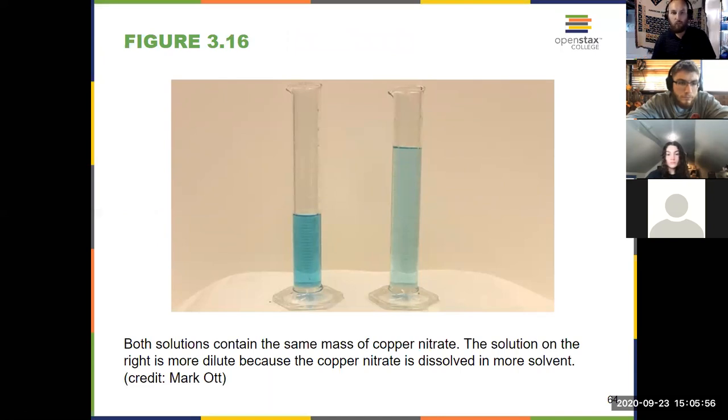And because dilutions are done so frequently, we have mathematical relationships that help us with these calculations. Okay? Because if we take this solution, for example, it's copper nitrate. And the copper is what gives it the blue color. Even though I added more water here and brought the volume up, it didn't mean that I took copper away. It's just more spread out. So the amount of copper that's in those graduated cylinders is staying the same. I'm just adding more solvent.